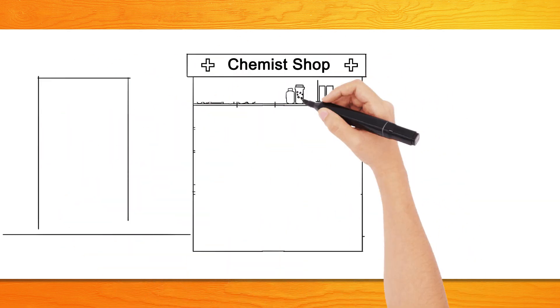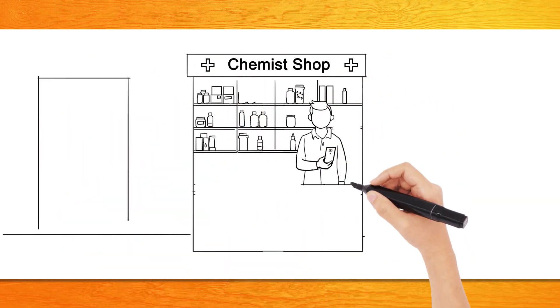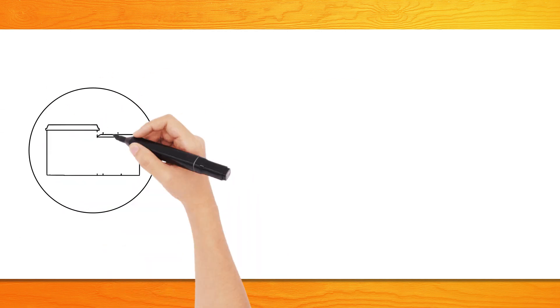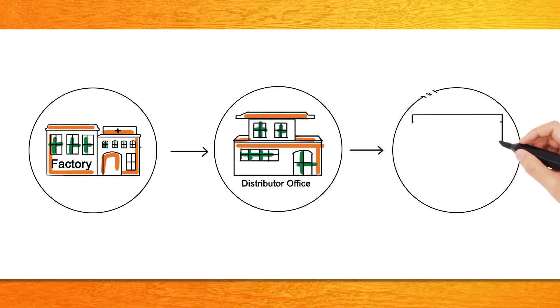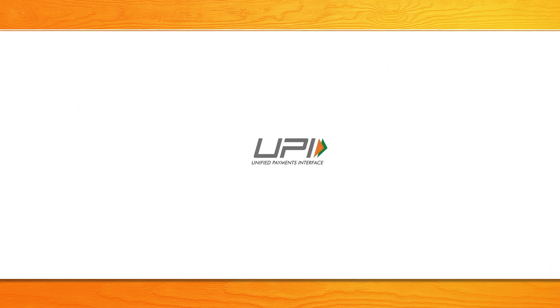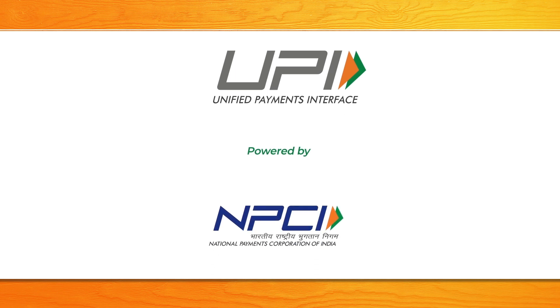The chemists no longer need to worry about cash handling and can make transactions instantly as and when required. The UPI pharma value chain helps fast forward your business with faster collections to further your business. UPI powered by NPCI.